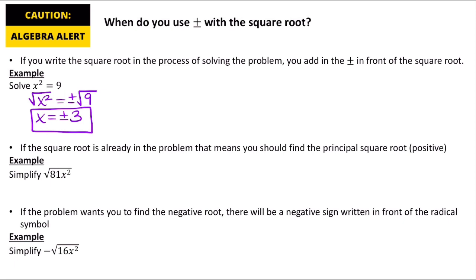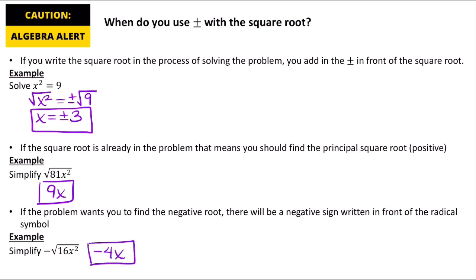If the square root is already there in the problem, that means to find the principal square root. For example, when it says simplify the square root of 81x squared, that square root is already written there, so we just take the positive square root, giving us 9x. If it wants you to find the negative root, there will be a negative sign written there. So if it says negative square root of 16x squared, that means we get negative 4x. That's how we know which root is required.